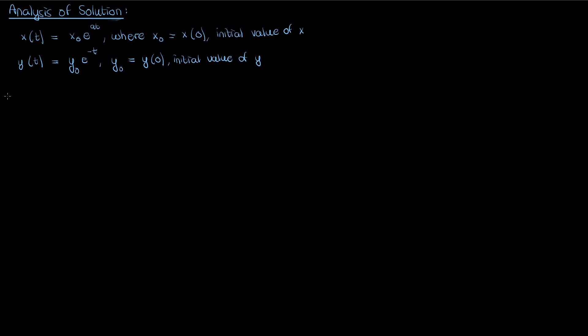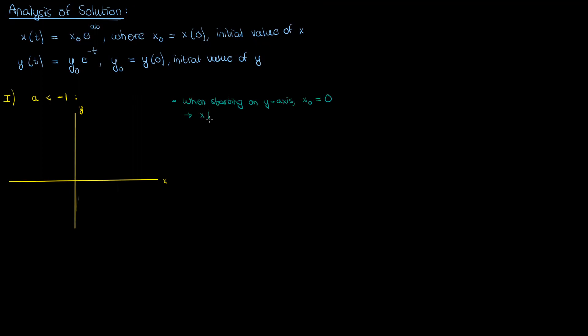Let's begin our analysis with the case where a, the coefficient on the exponential for x(t), is less than negative 1. Let me draw a phase portrait to help with the analysis, with x and y represented by each of the axes. If our initial condition is on the y-axis where x is zero, then as time goes on x isn't going to change. If x₀ equals zero then x(t) is just zero. Now y is still non-zero when we start on the y-axis, but based on the solution for y(t), our dynamical system would then gradually converge to the origin as time goes on. As time approaches infinity this negative-exponent exponential will approach zero and our dynamical system will approach the origin, which is our lone fixed point.